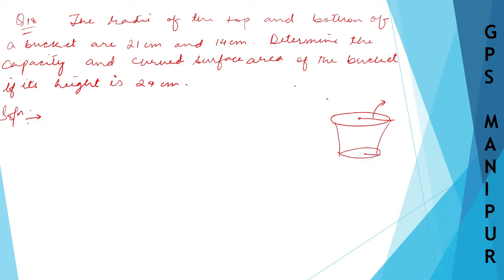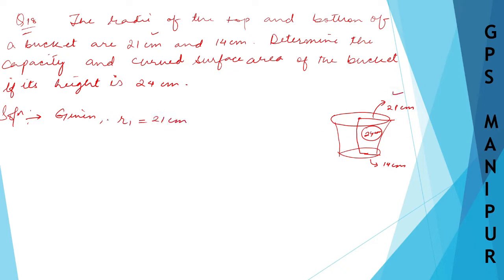The top radius is 21 centimeters and the bottom radius is 14 centimeters. We need to determine the capacity and curved surface area of the bucket if the height is 24 centimeters. So given: r1 = 21 cm, r2 = 14 cm, height h = 24 cm. The question is asking us to find the capacity, which means volume.